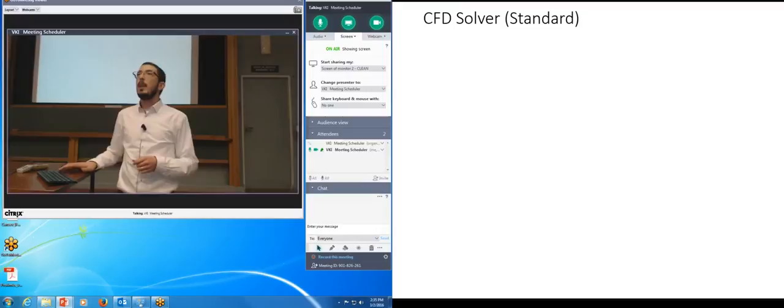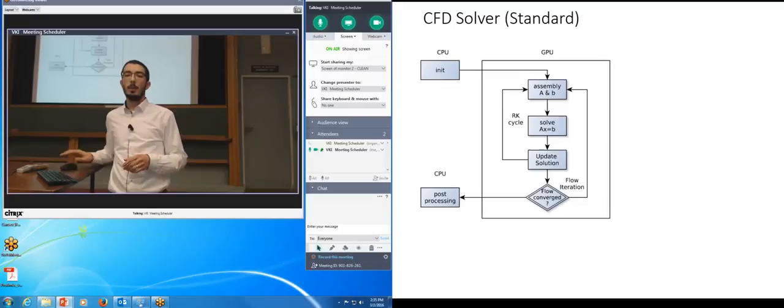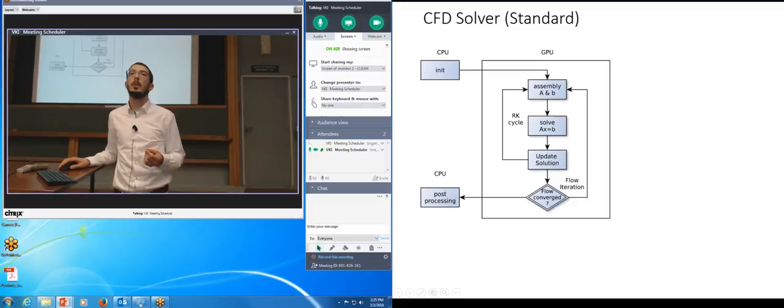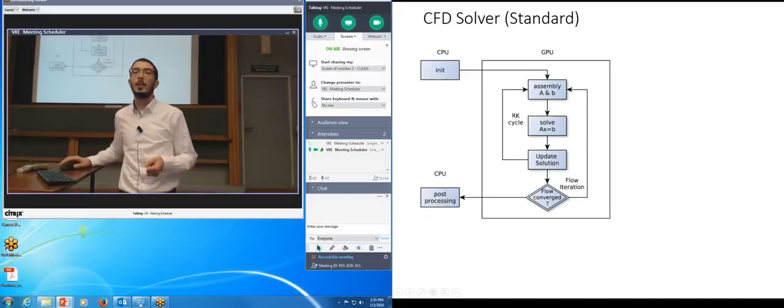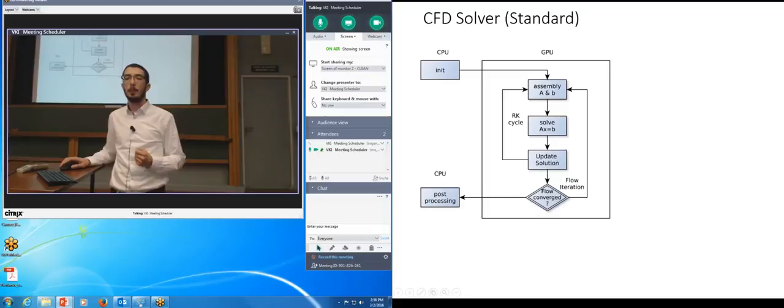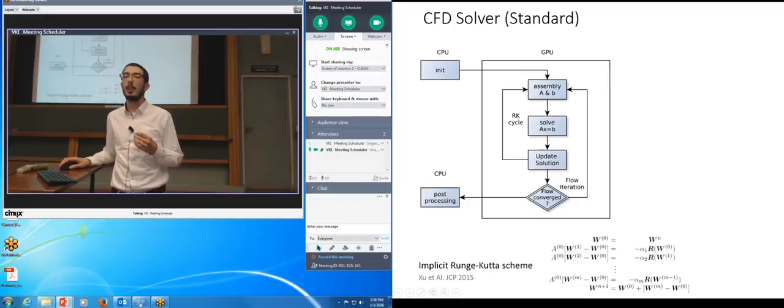Let's move now to the solver itself. I have two versions. Standard version I will show now. What we can learn is that the GPU anyway cannot stand, cannot be a standalone hardware. It's a coprocessor. It needs a CPU to initialize the problem. Then we do all the CFD iterations inside the GPU until the flow converges, then we copy back the solution to the CPU for post-processing. Inside every flow iteration, we need to assemble the system, as I said, and solve it. And this we do it repeatedly in the Runge-Kutta scheme, an implicit Runge-Kutta scheme, where in order to go from time point n to n plus one, you go through many stages where you change the Runge-Kutta coefficient and your residual.